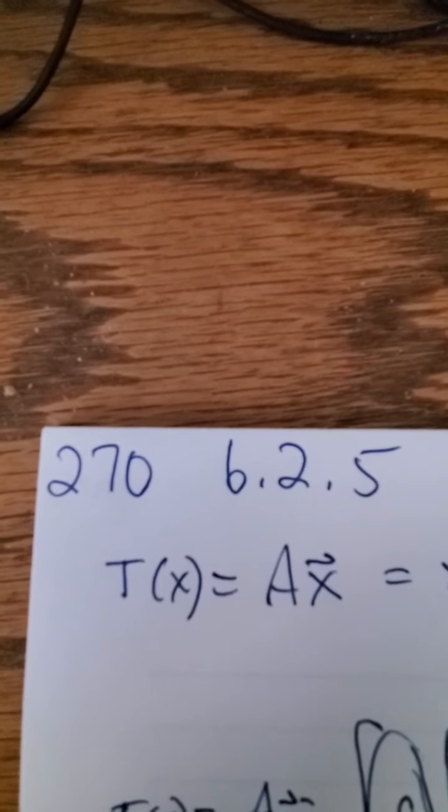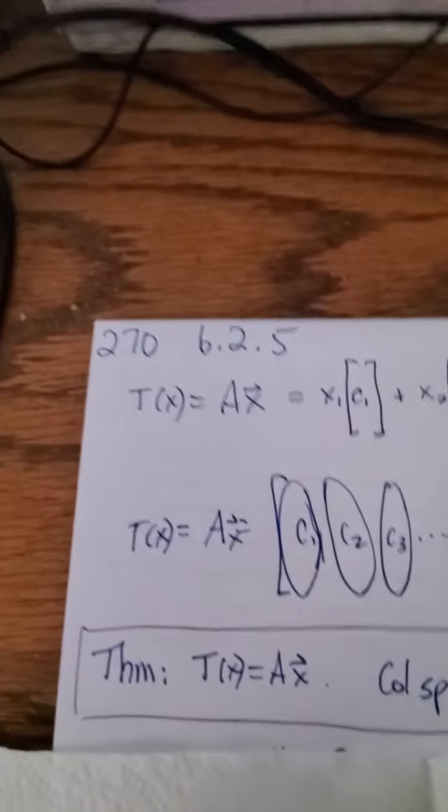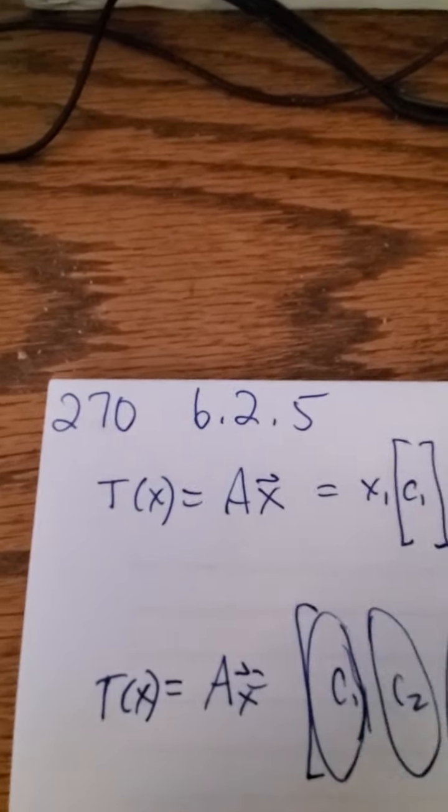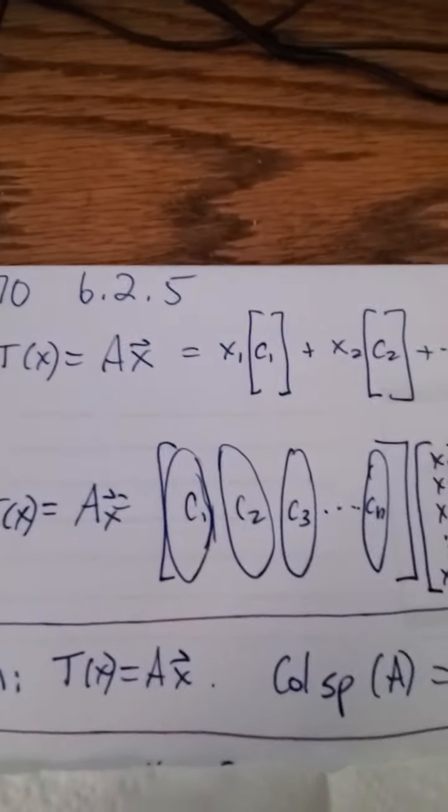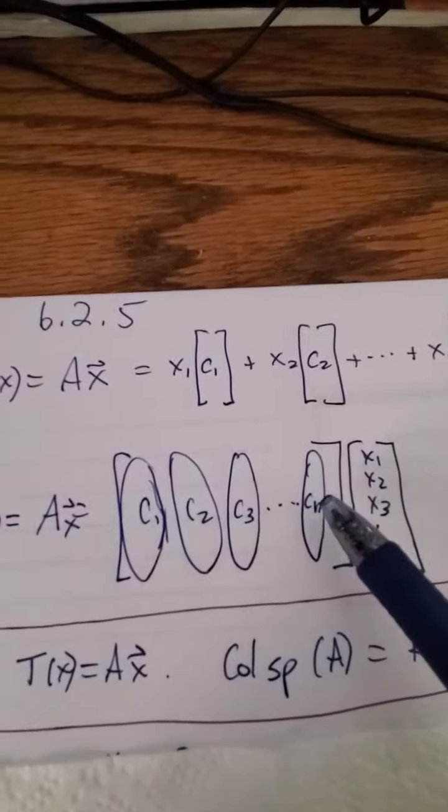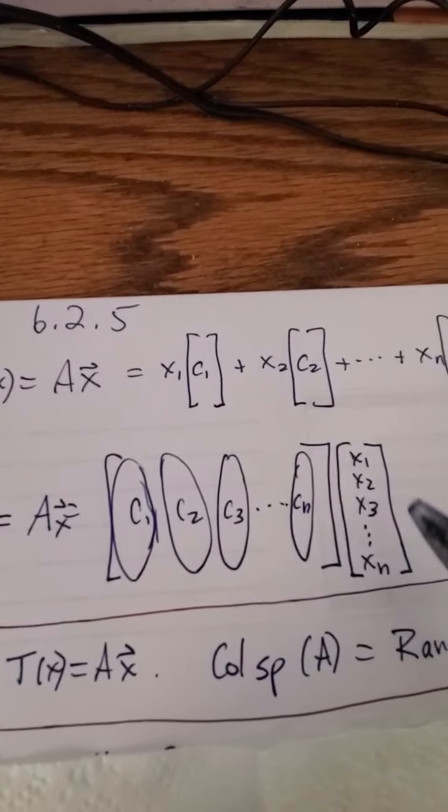Now we're going to look a little bit about the range of a linear transformation. So let's say we have a linear transformation T(x) which is defined by the matrix, some matrix A times x. In other words, I take the matrix A, and A has a bunch of columns in it, and multiply it by this vector x.